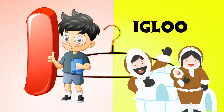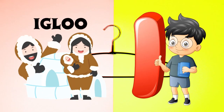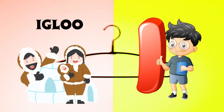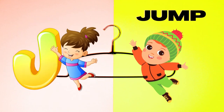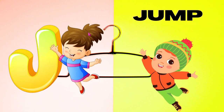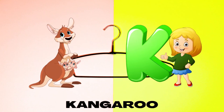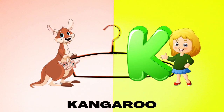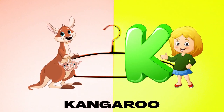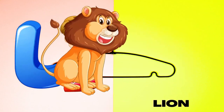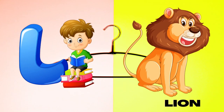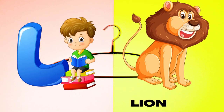I is for Igloo, I-I-Igloo. J is for Jump, J-J-Jump. K is for Kangaroo, K-K-Kangaroo. L is for Lion, L-L-Lion.